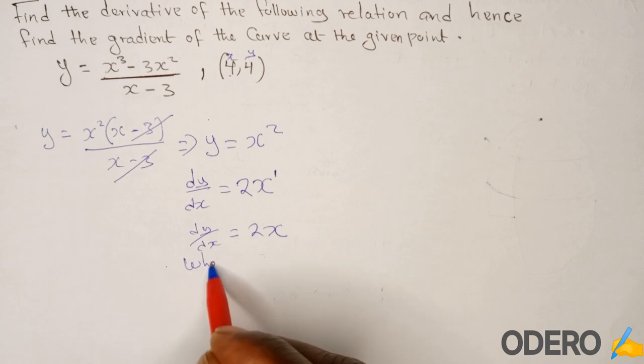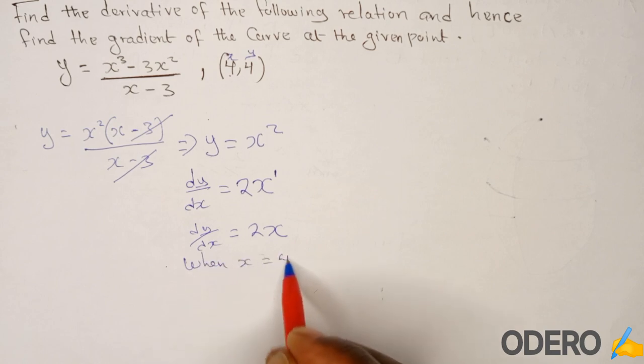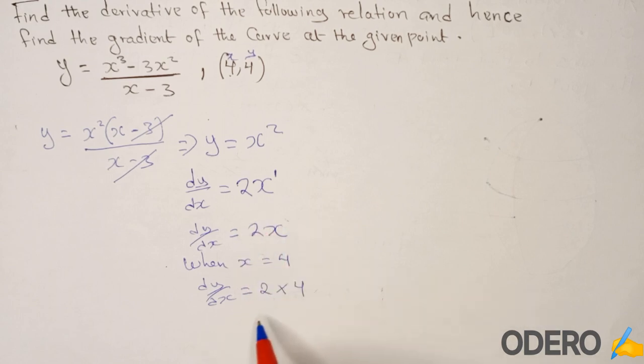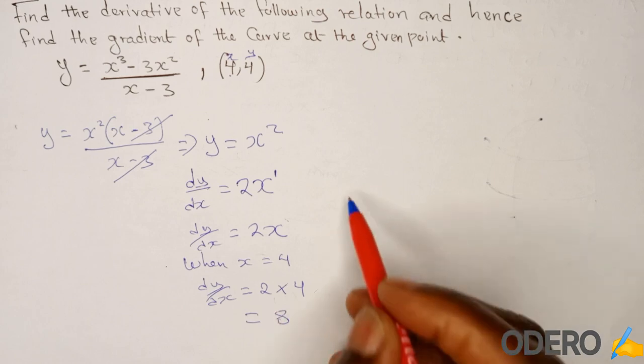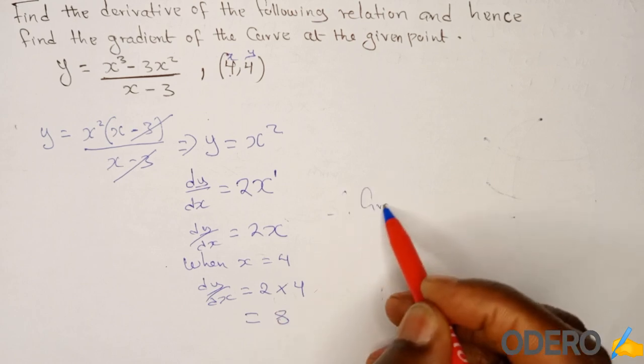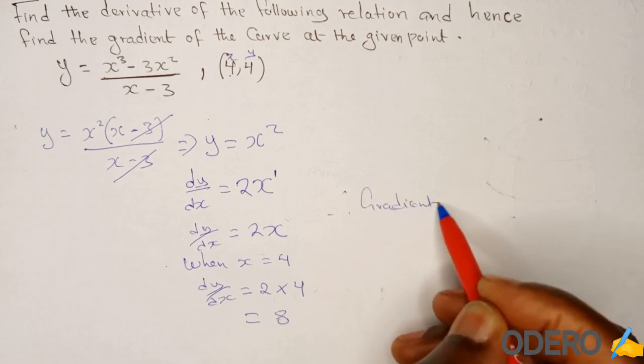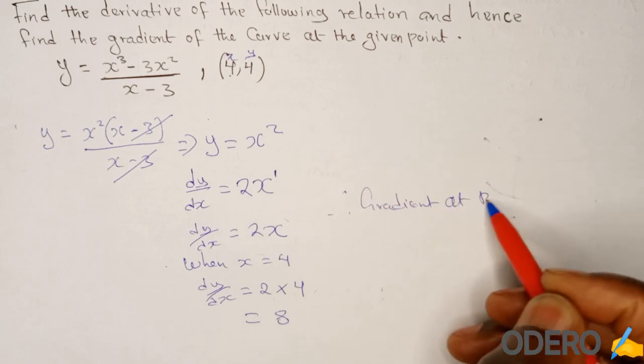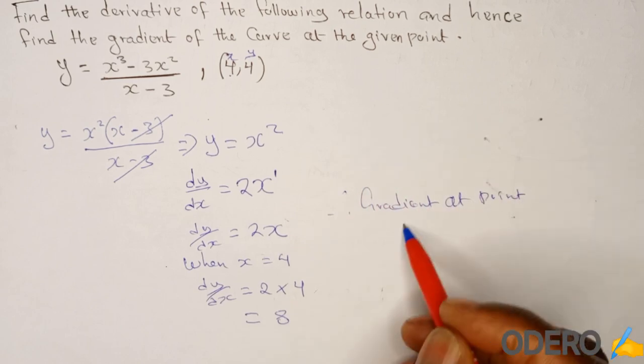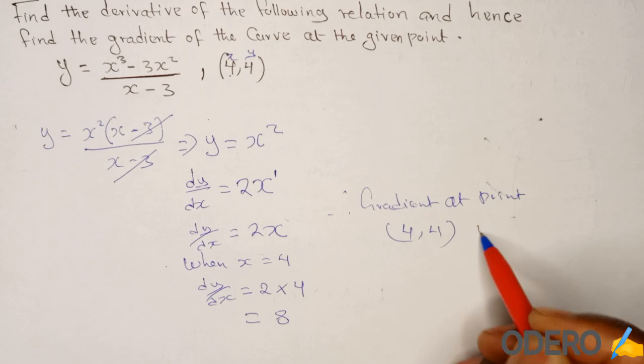When x is 4, what will be our dy/dx? If you substitute here, this will be 2 times 4, so it will give you 8. Therefore it means gradient at this point, at point (4,4), is 8.